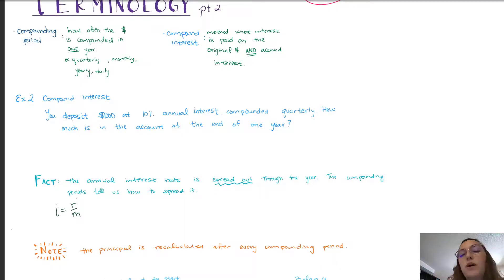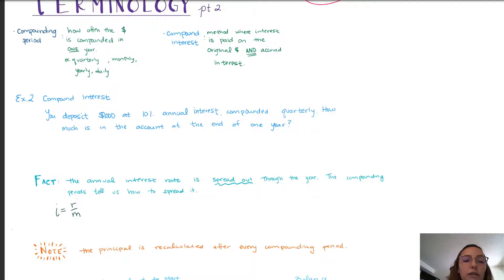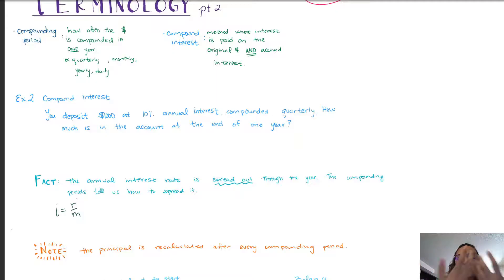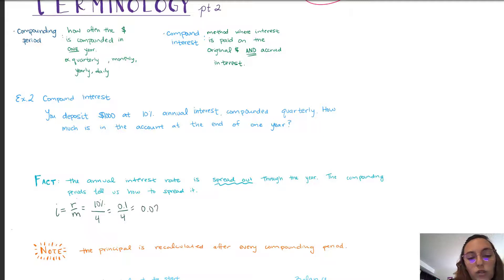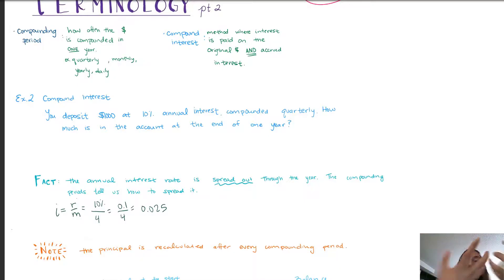Let's explore through an example. Again we deposit $1,000 at 10% annual interest, compounded quarterly — so four times. We want to see how much we have in our account at the end of the year. In compounding, the interest rate is spread out throughout the year. The number of compounding periods tells us how many pieces to spread the interest rate into throughout the year — that is what our i represents. In our scenario the interest rate is 10% spread over four periods: 0.1 divided by 4 equals 0.025. So 0.025 is the rate we apply after every compounding period.